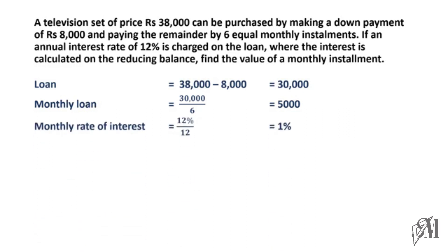Next, we calculate the monthly rate of interest. The annual rate of interest is 12%, so dividing by 12 gives a monthly rate of 1%. Using the monthly loan of 5,000 rupees and the monthly rate of 1%, the monthly interest is 50 rupees.